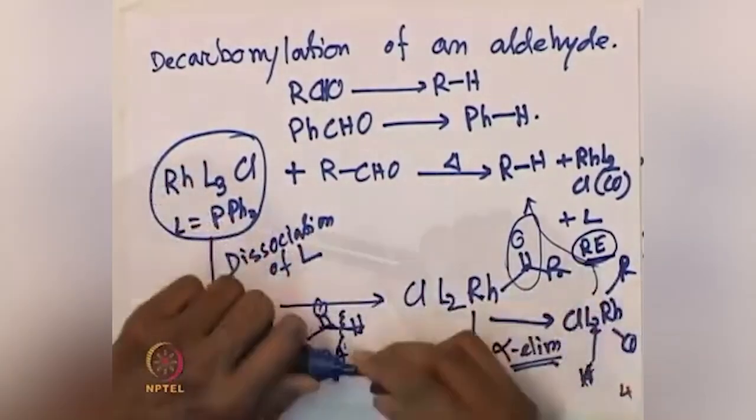Overall, the aldehyde is effectively converted to the alkane. Benzaldehyde can be converted to benzene; an aliphatic aldehyde can give the alkane with one less carbon. This is an important reaction where biomass can be converted to fuel-grade alkane. In addition to rhodium, palladium and iridium are also very effective for such aromatic aldehyde decarbonylation reactions.